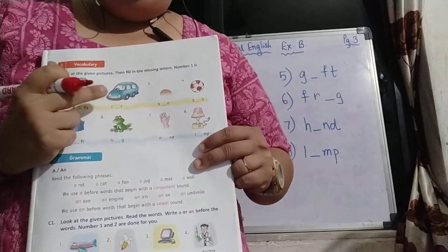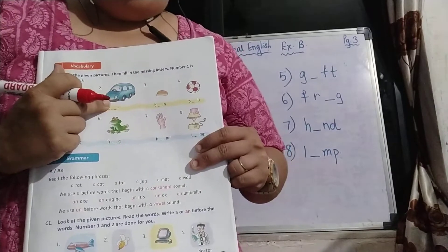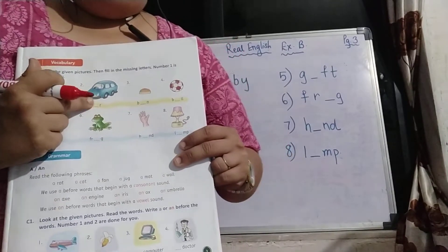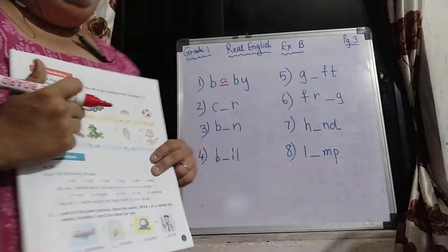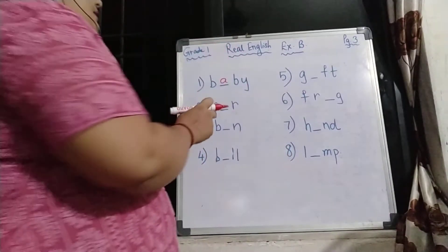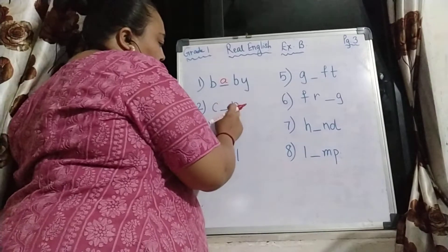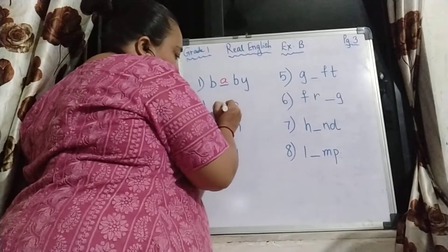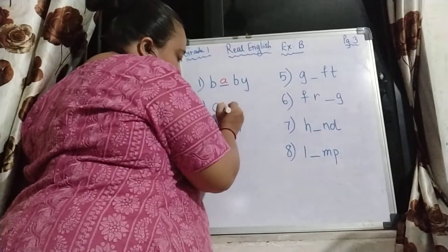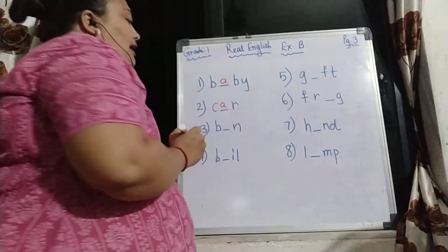C — what is this? Car. So what is the name for car? It's C-A-R. The missing word is car.